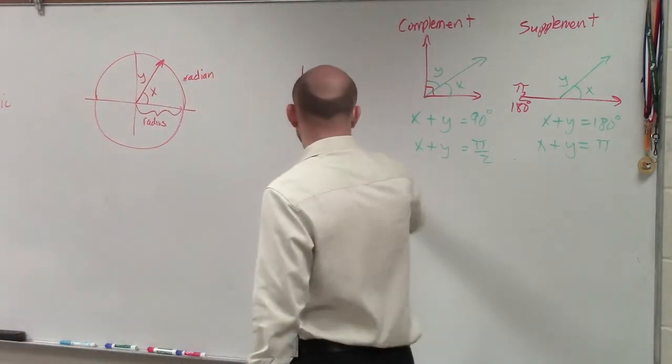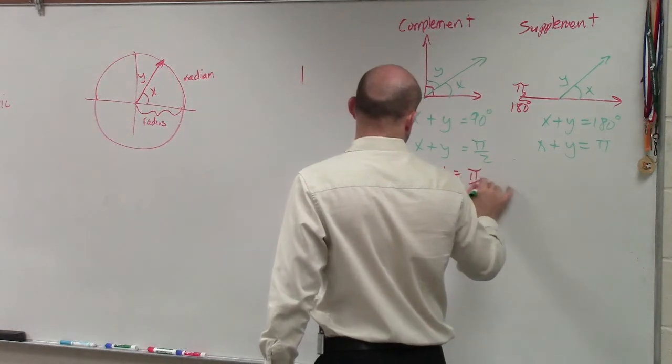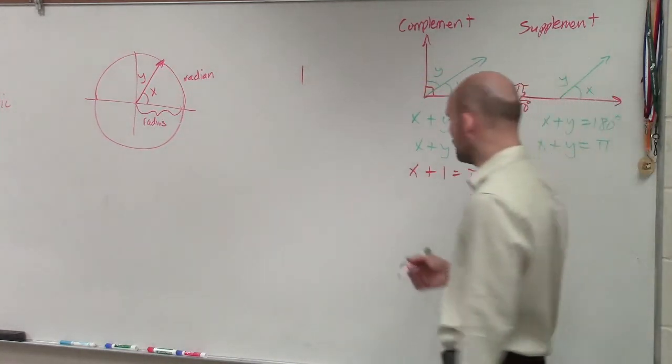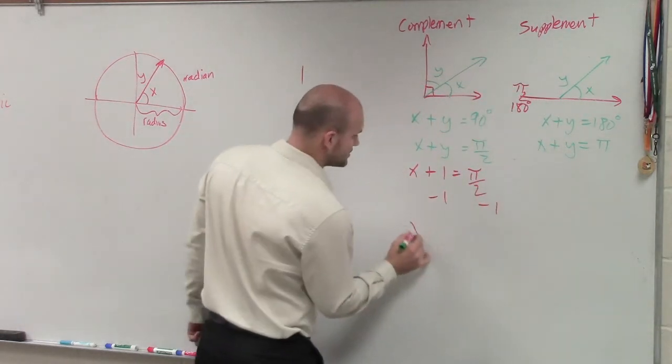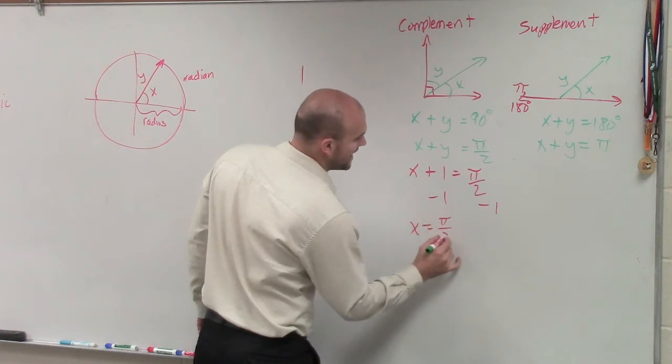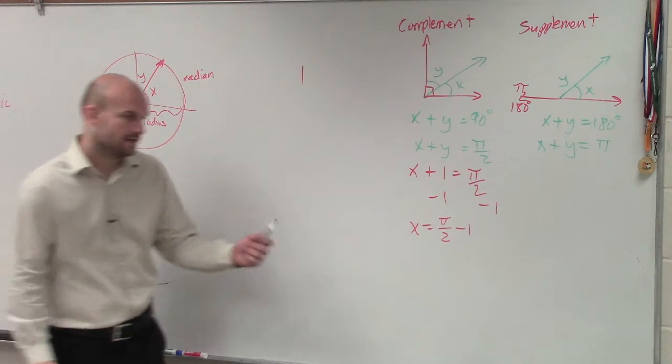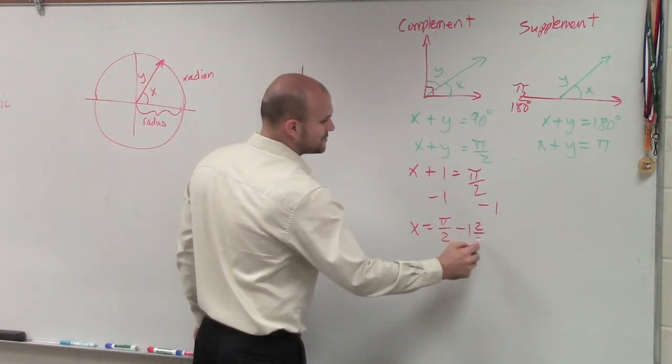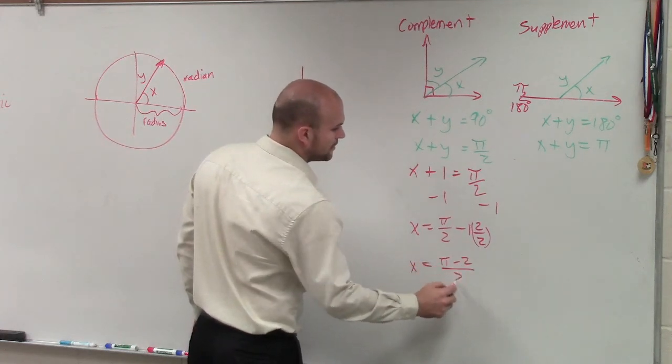It's going to be x plus 1 equals pi over 2. So now we need to solve for x. We already know 1 is the radian. So we subtract 1. So x equals pi over 2 minus 1. And then if you're going to convert this, multiply by 2 over 2, equals pi minus 2 divided by 2.